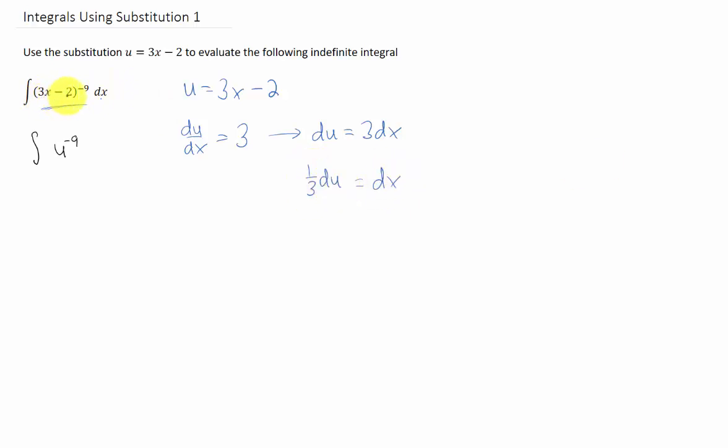So when we replace this 3x minus 2 with a u, we can also replace this dx with a 1/3 du. Now pulling that 1/3 outside gives us the integral of u to the negative 9th du. Now the variable in our integrand is the same as the variable that we're integrating with respect to. So that's what we want.